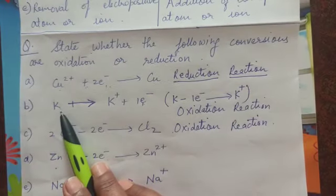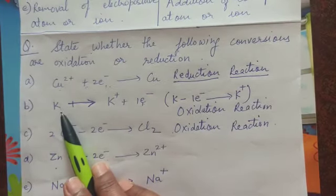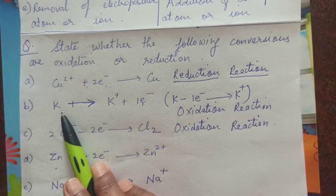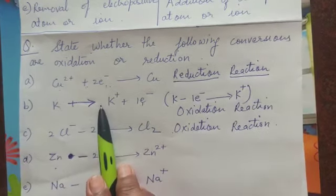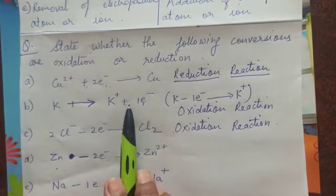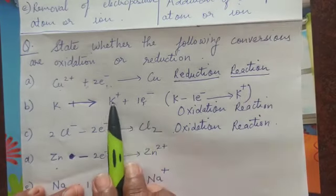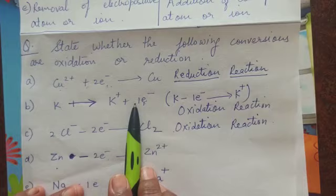Here next reaction has been shown, potassium atom and it converts to K⁺ ion and plus 1 electron. You can write this reaction in other way also.